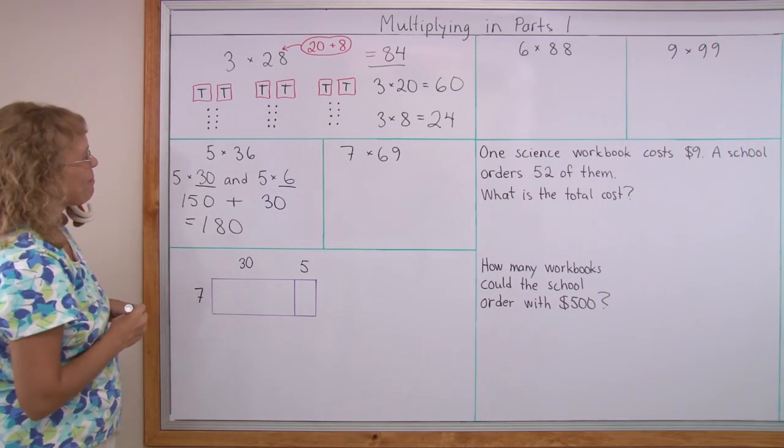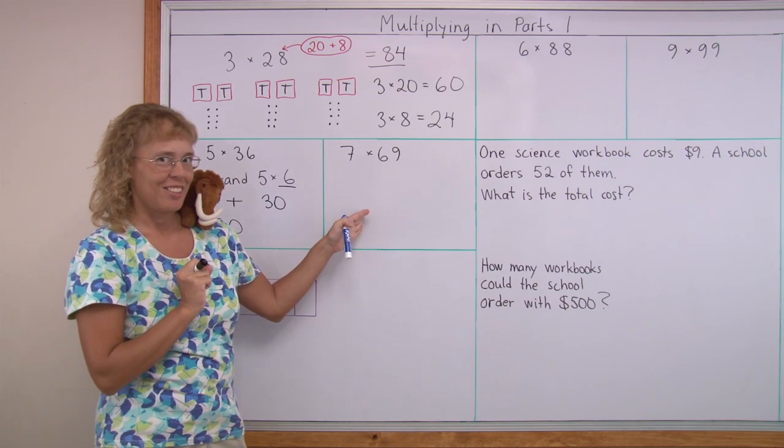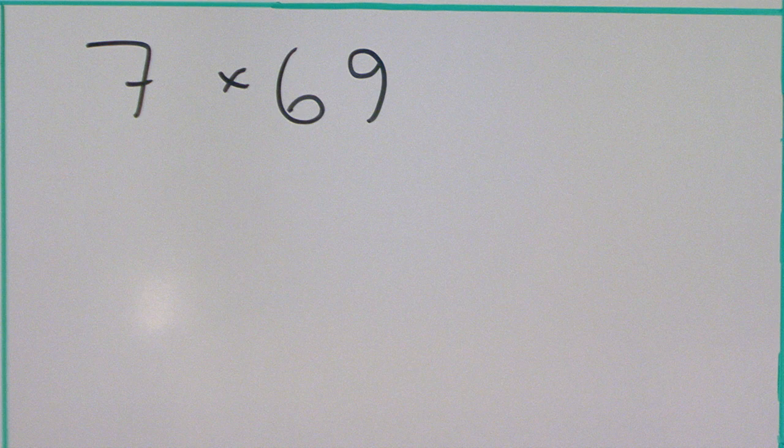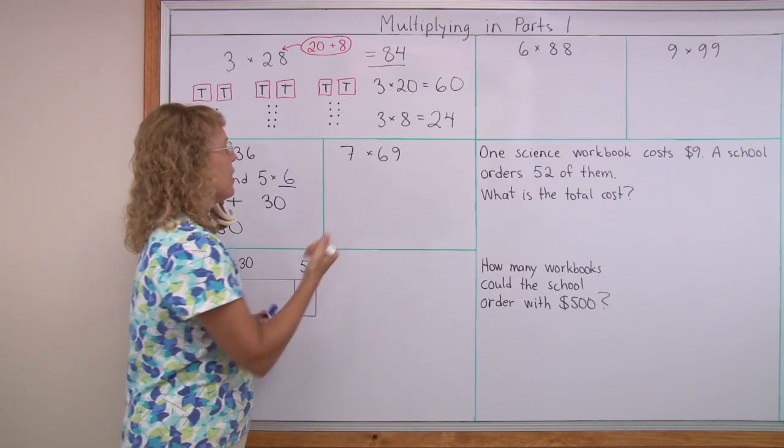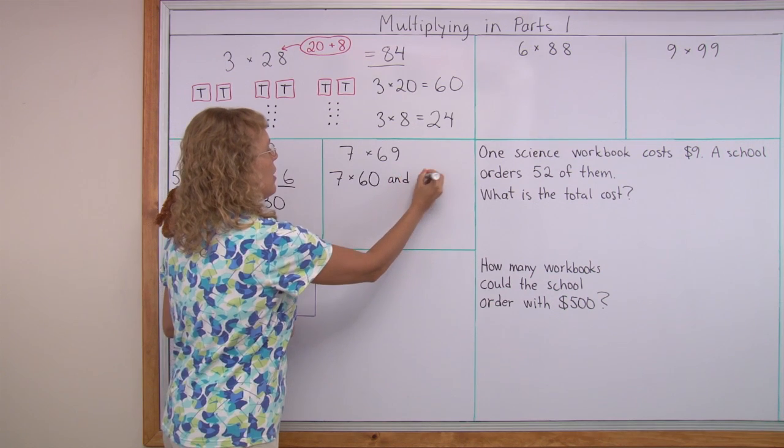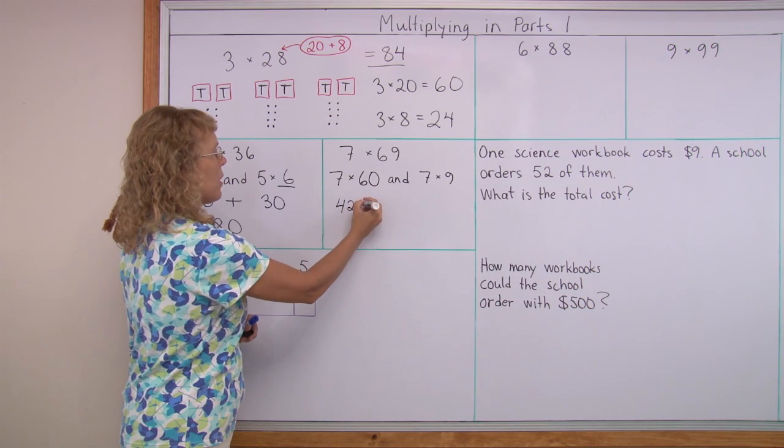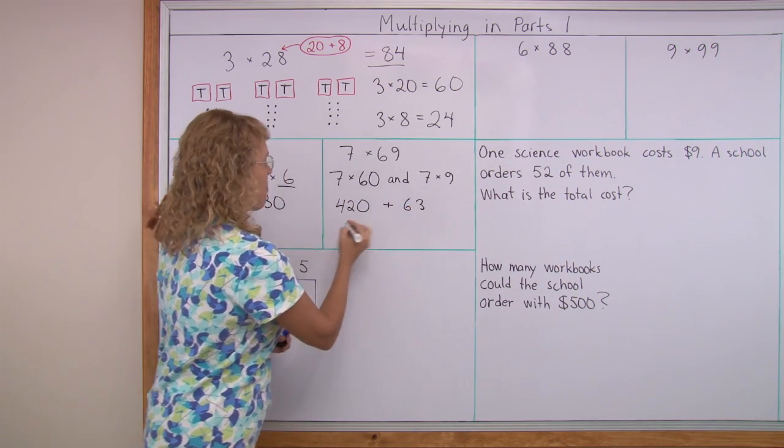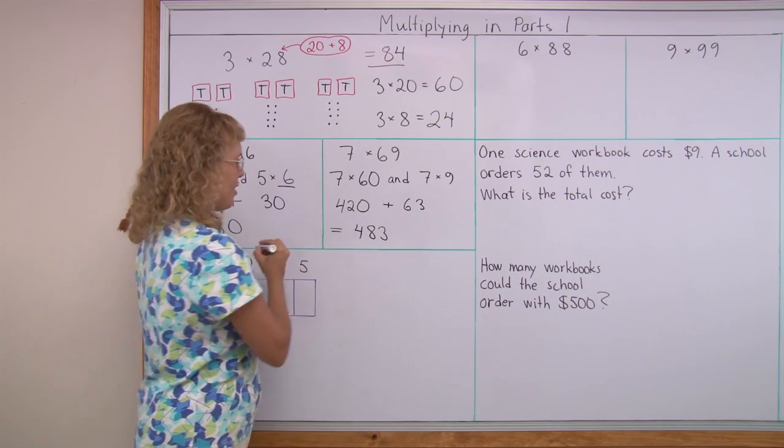So this is easy, right? One more. You try it yourself before I get to it. 7 times 69. 69 is 60 plus 9. So I multiply 7 times 60 and 7 times 9. This is 7 times 6, which is 42, and then the 0. And this is 63. And now adding those, 20 and 60 is 80, 3 and 400 gives us 483.